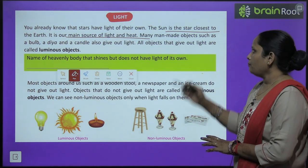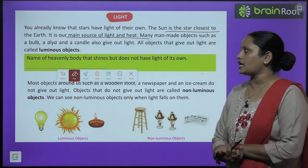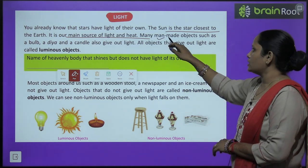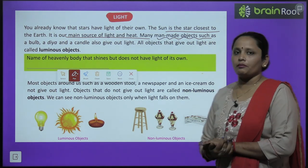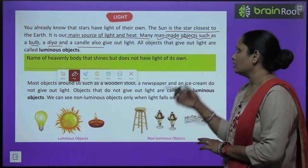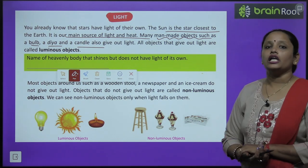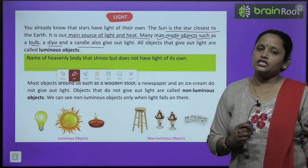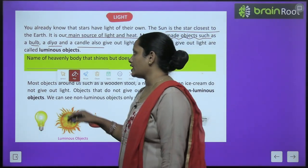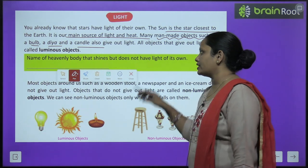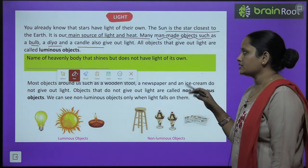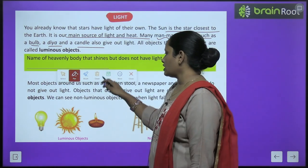The sun is our main source of light and heat. Many man-made objects such as a bulb, a dia and a candle also give us light. These man-made objects bhi hamein light dete hain — ek bulb, dia aur candle. All objects that give us light are called luminous objects. Jitni bhi chizein hamein roshni deti hain un sab ko luminous objects kehte hain.